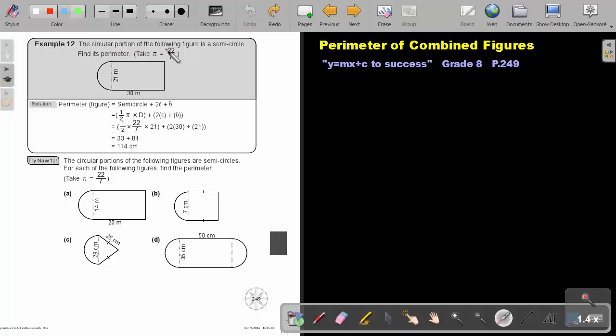Let's look at example 12. The circular portion of the following figure is a semicircle. Find its perimeter. Now remember, the perimeter will be the outside lines. So if I start there, it will be half a circle, so that's a semicircle.